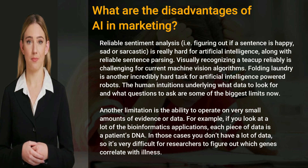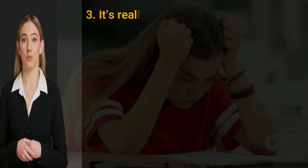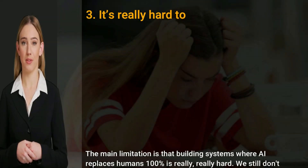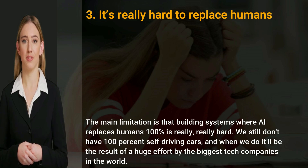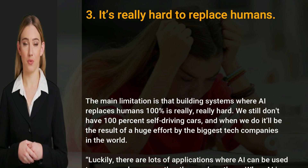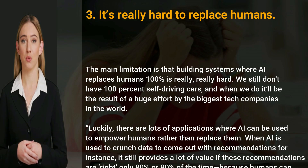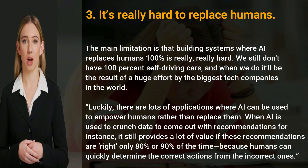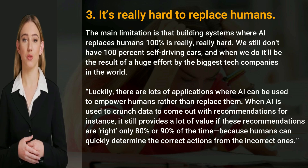Three: it's really hard to replace humans. The main limitation is that building systems where AI replaces humans 100% is really, really hard. We still don't have 100% self-driving cars, and when we do it'll be the result of a huge effort by the biggest tech companies in the world.